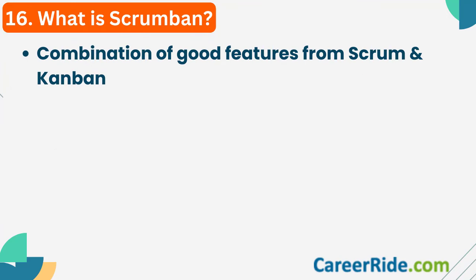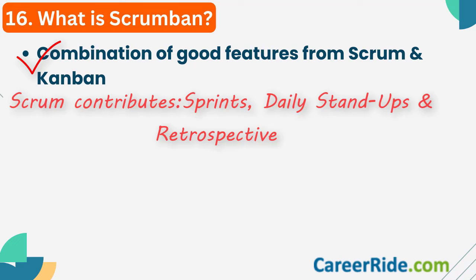Question number 16: what is Scrumban? Scrumban is a hybrid project management framework combining good features from both Scrum and Kanban. Scrum contributes three important elements: sprints, daily stand-ups, and retrospectives. Kanban's contribution includes workflow visualization, Kanban boards, cards, work-in-progress limits, the pull system, and the continuous flow of work.